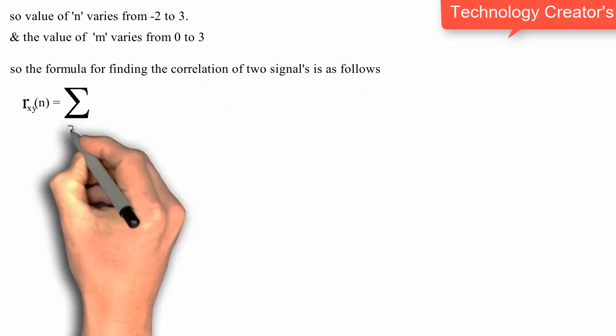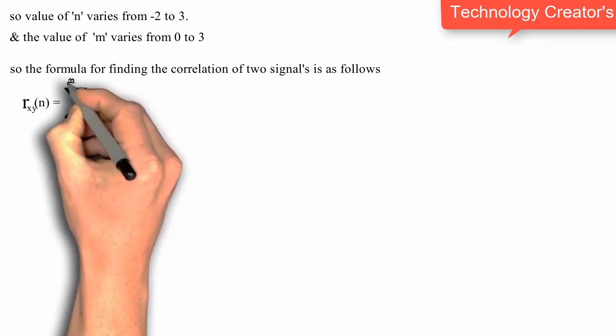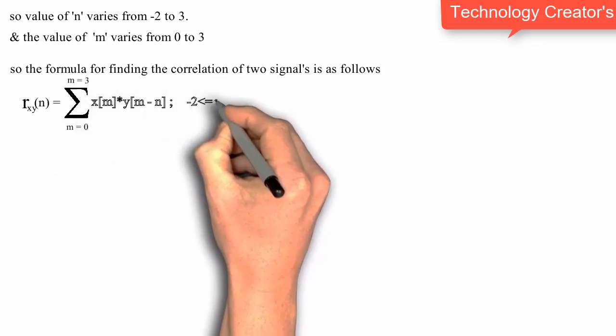So in that case we find the relation R of Z. The correlation R of Z is given by the sum of M equal to minus infinity to infinity, X of M multiplied by Y of M minus N.